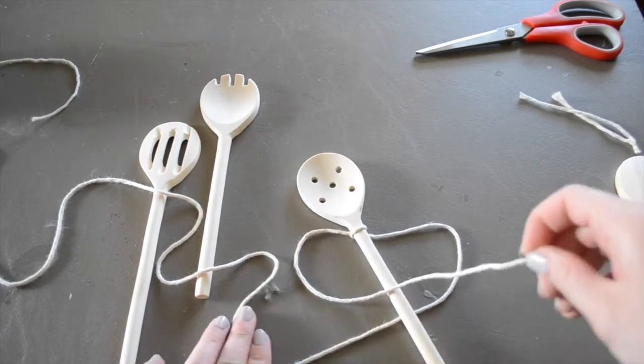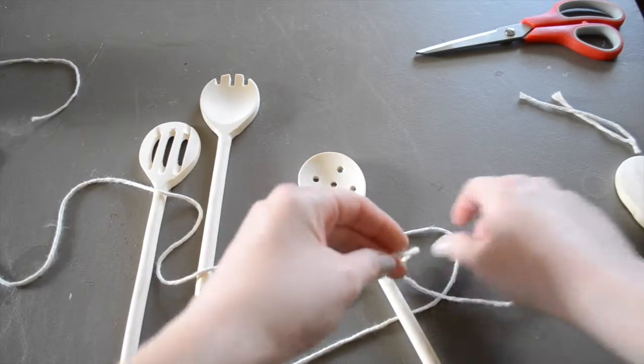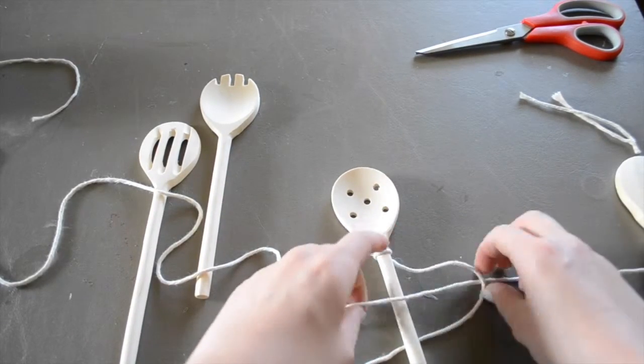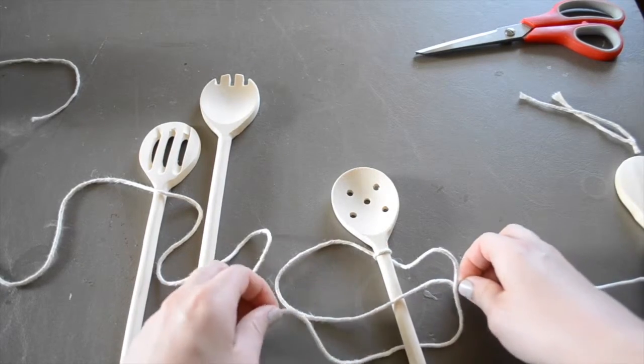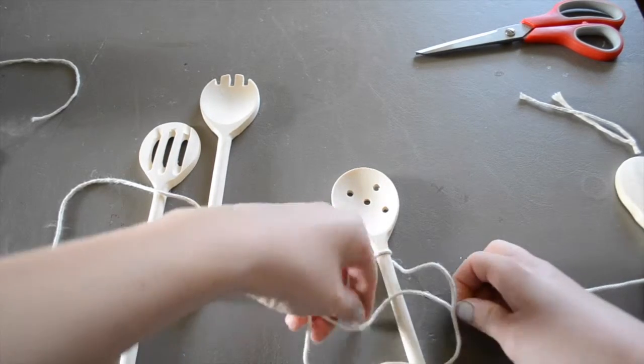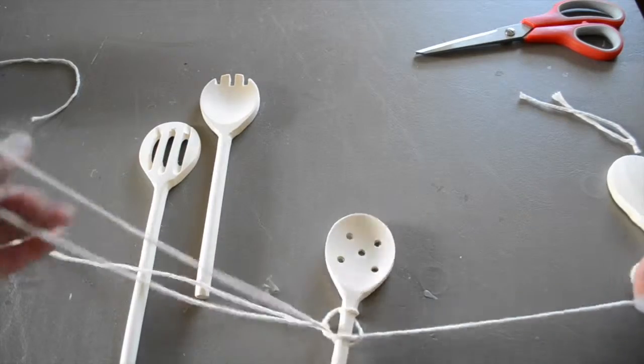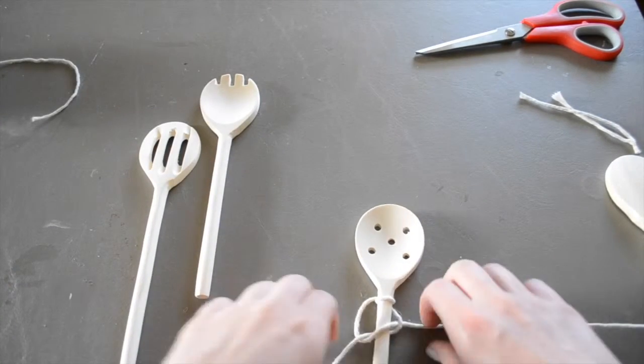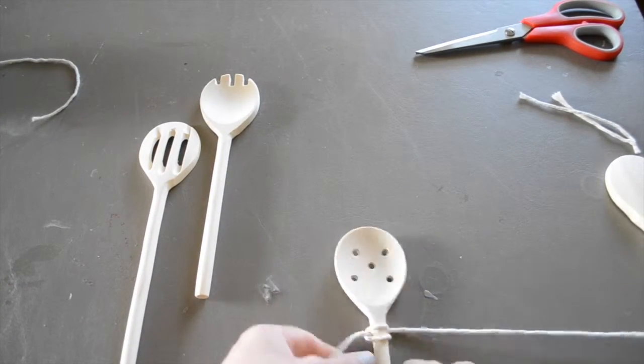Then I'm going to take this string and pull it through this right loop. Then I'm going to take this string and pull it up through this loop, and pull this up nice and tight on my handle.